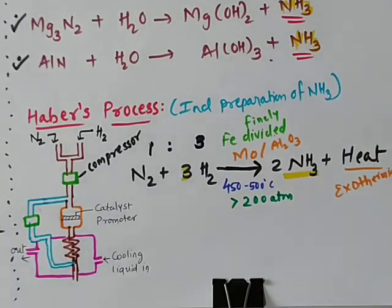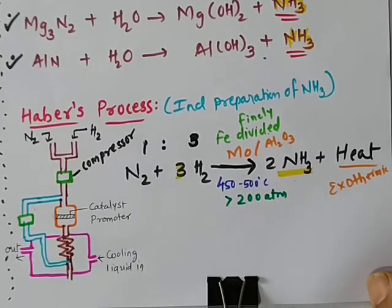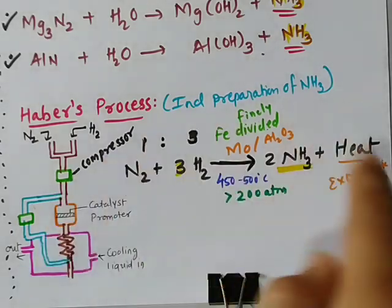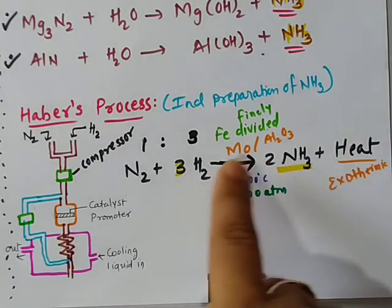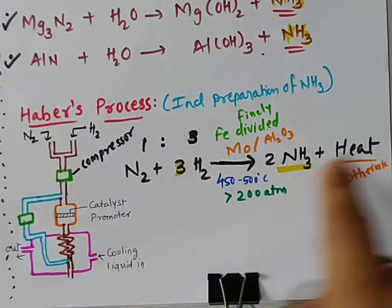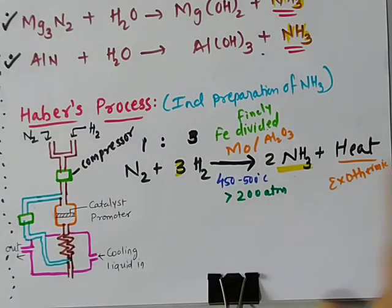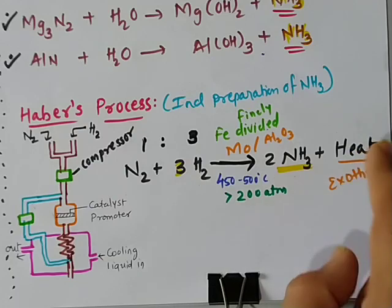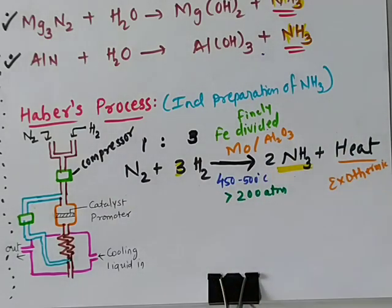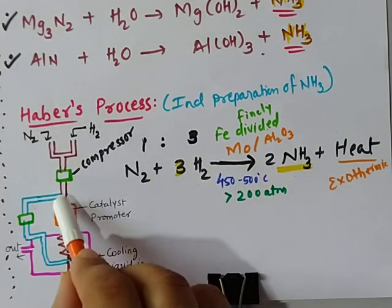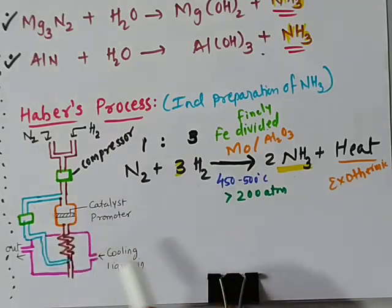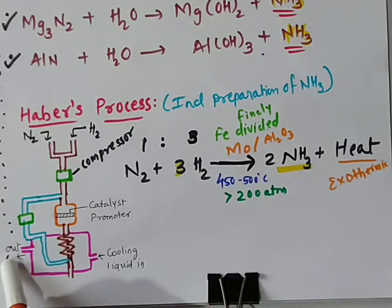An advantage of Haber's process is that it is exothermic. Once the reaction starts, the heat generated maintains the temperature of 450–500°C, so you don't need to continuously supply external fuel. The nitrogen and hydrogen combine to form ammonia, which is then passed to a cooling tower where cooling water or ice is used to condense it.